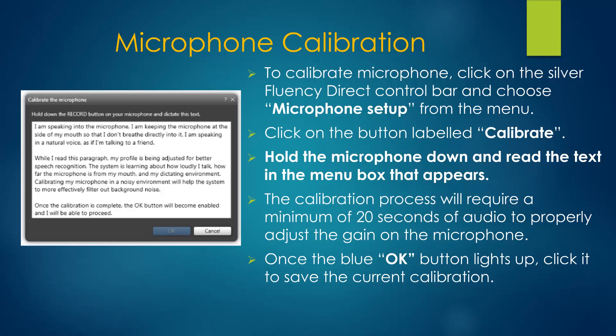Hold down your microphone record button and begin reading the three paragraphs in the black menu box. The text will highlight as you read through it. The calibration process requires a minimum of 20 seconds of your voice audio to properly adjust the gain on the microphone. Once the blue OK button lights up, your mic has been calibrated. Click OK to save the calibration.